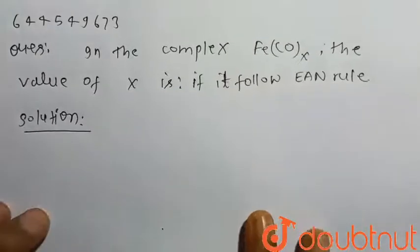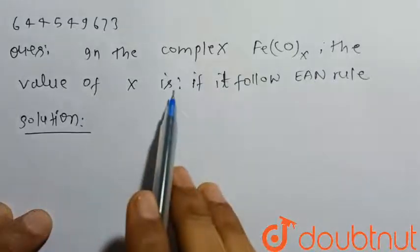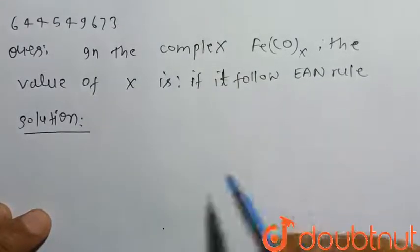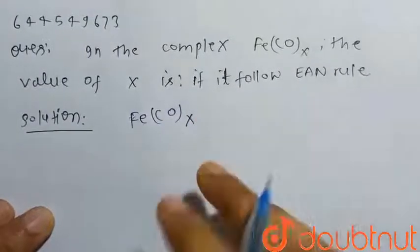Hello everyone, consider the given question. In the complex Fe(CO)x, the value of x is if it follows EAN rule, or effective atomic number rule. So consider the given complex, that is FeCO x.